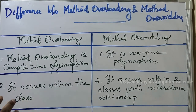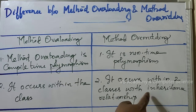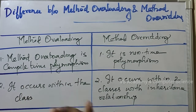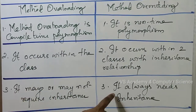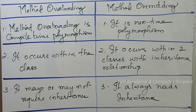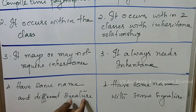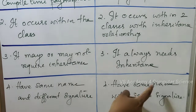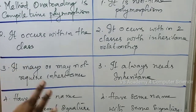The second difference: method overloading occurs within the same class, while method overriding is implemented across two classes with an inheritance relationship — a parent class and a child class. The third difference: method overloading may or may not require inheritance, but method overriding must require inheritance. The fourth difference: method overloading has the same name but different signatures, while method overriding has the same name and same parameters but different classes.